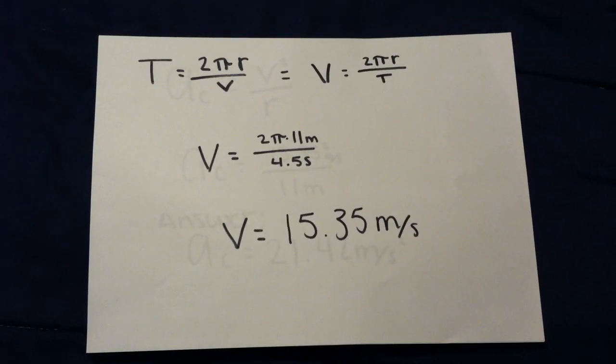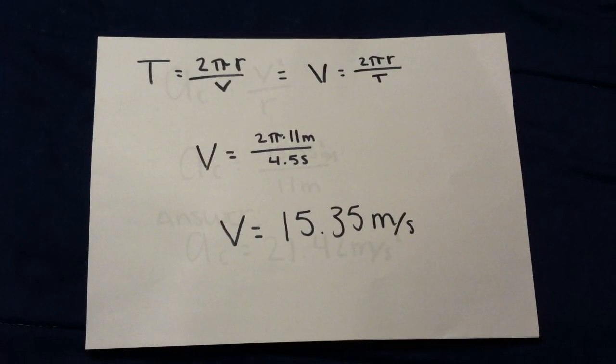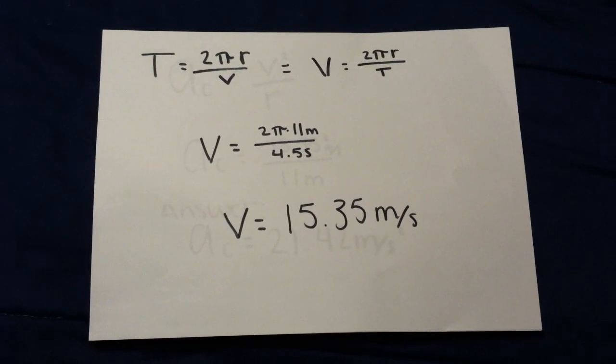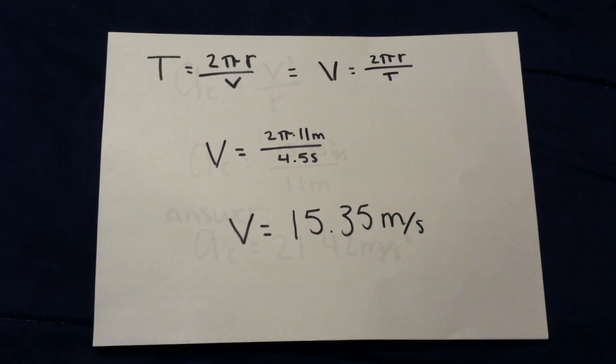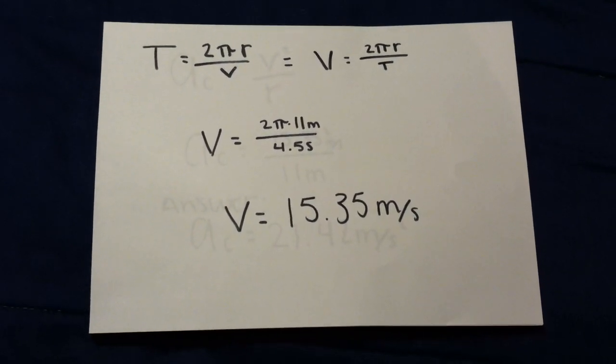We had to find velocity so we switched the equation to 2 pi r divided by t. Then put the given in: 2 pi times 11 meters divided by 4.5 seconds, which equals 15.35 meters per second.